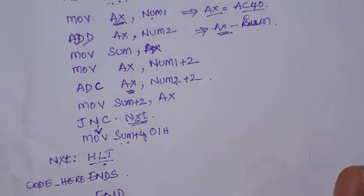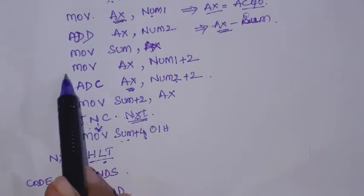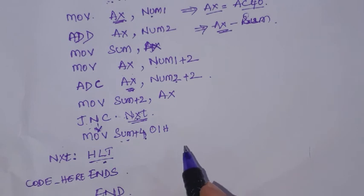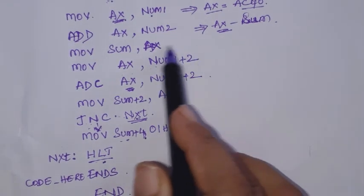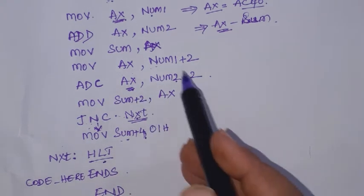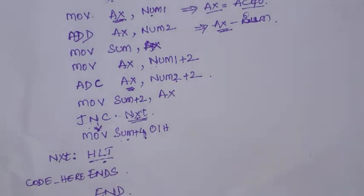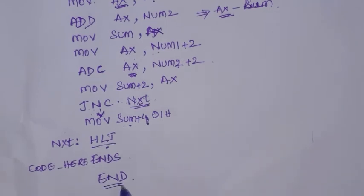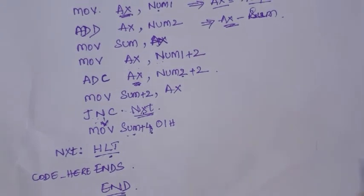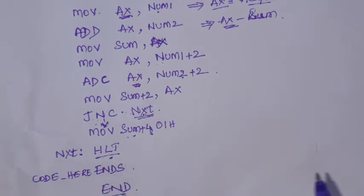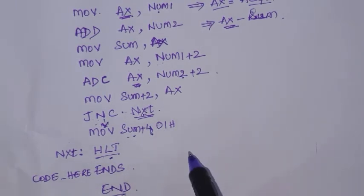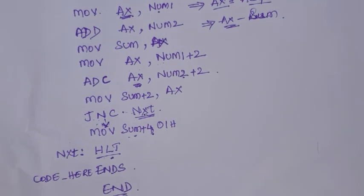This is how you write a program using assembler directives. While explaining the instructions, I had written these programs in short without using any assembler directives, using addresses directly. This version uses directives. If you have not seen the video on assembler directives, go through that first — it explains why and how to use these directives. This is the program for adding two 32-bit numbers.